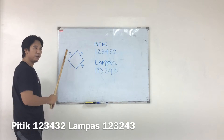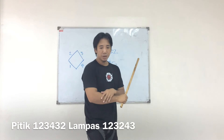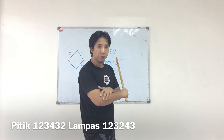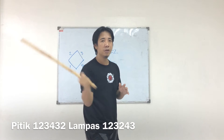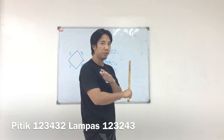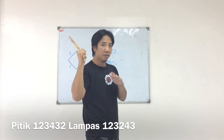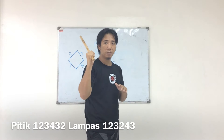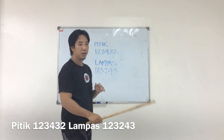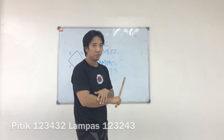If you notice, I did two strikes at number two and two strikes at number three. The reason for that is because we have two types of positions: the closed position and the open position. When you're in a closed position your stick is on the left side of your body, and on the right side when you're in an open position.